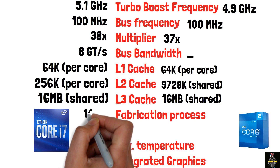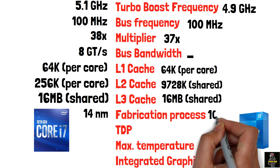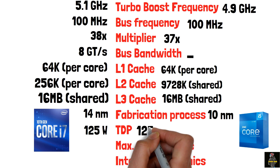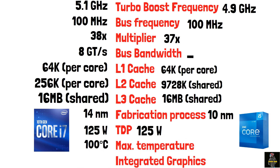The i7-10700K is manufactured on a 14 nanometer process, while the i5-12600K uses a 10 nanometer process. Both have a TDP of 125W and a maximum temperature of 100 degrees Celsius.